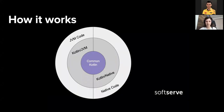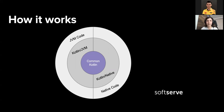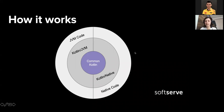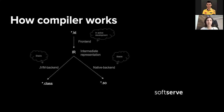Let's talk about how it works. In the center is common Kotlin, which contains the Kotlin core, basic libraries, and basic frameworks. The next level is Kotlin JVM and Kotlin Native, which contain special libraries and Kotlin language extensions for each. Then there is JVM code and native code where you can use your library or SDK.